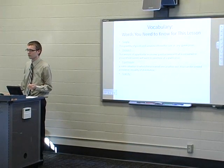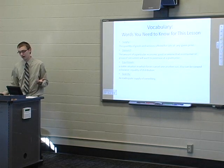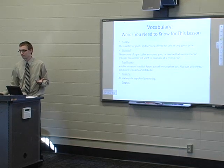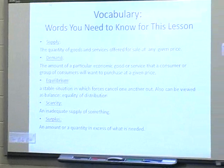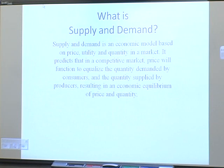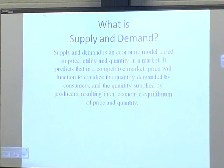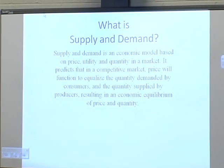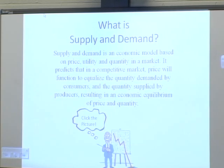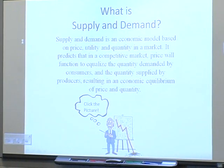Scarcity? Ben? Just when there is a shortage of supply. Very good — inadequate supply of something. And surplus? When you've got more than enough. Right, an amount or quantity in excess of what is needed. So, supply and demand is an economic model based on price, utility, and quantity in a market. It predicts that in a competitive market, price will function to equalize the quantity demanded by consumers and the quantity supplied by producers, resulting in an economic equilibrium of price and quantity. Here's a short YouTube video that sums it up pretty well.